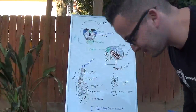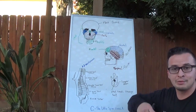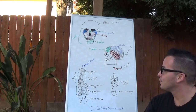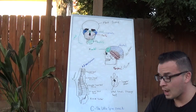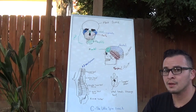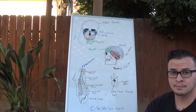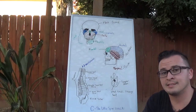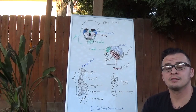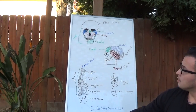Welcome back to EMT Made Easy. I'm going to go over anatomy and physiology — just a little sub-section of that, focusing on the head and the spine today. Anatomy, in its simplest term, is just about parts — body parts, body systems. Physiology is the function of those parts, how they all work together or by themselves.